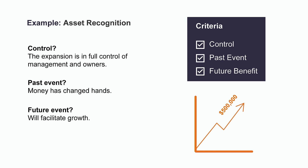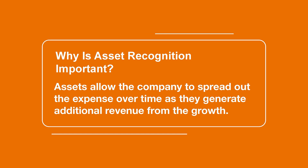It looks like we've got great news for the company. From this analysis, it appears that this $500,000 expenditure meets all of the required criteria to be recognized as an asset on the balance sheet. Why is this so important? Well, instead of taking a one-time $500,000 hit to their profitability in that period, this would allow the company to show this value as an asset in their financials, which means they can spread out the expense over time as they generate additional revenue from the growth.